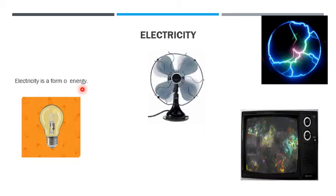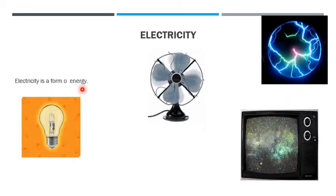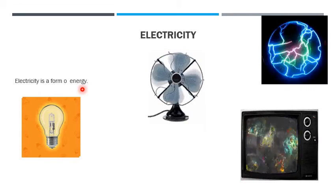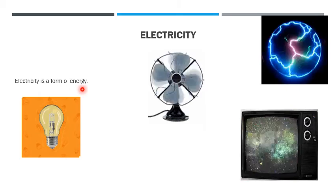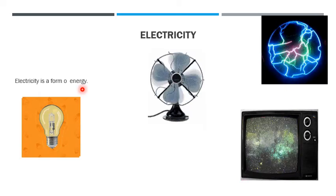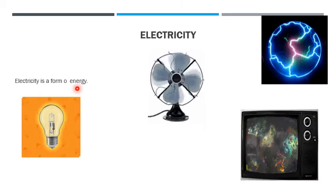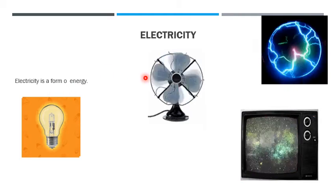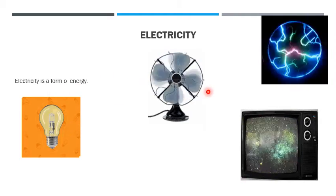It is easily convertible to other forms of energy and can flow along cables, which makes it easy to transport. Electricity is used to power many devices like fans, bulbs, etc.